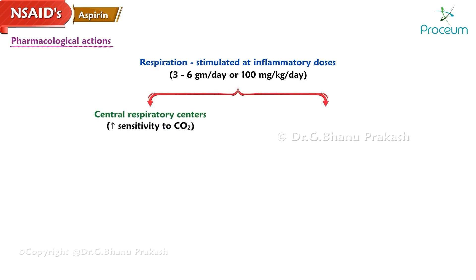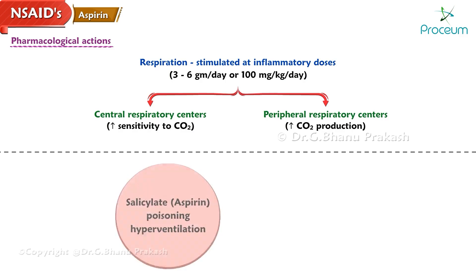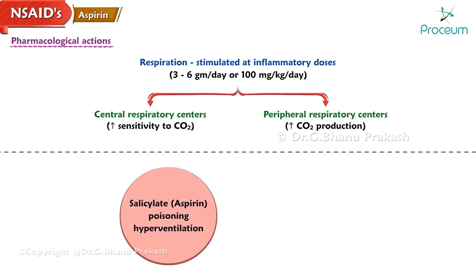The respiratory stimulation is both central (increased sensitivity to carbon dioxide) and peripheral (increased carbon dioxide production) at the respiratory centers. In cases of salicylate poisoning, hyperventilation is a significant complication which may lead to respiratory depression and death if left untreated.